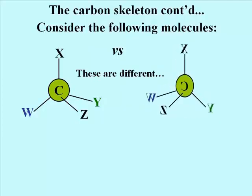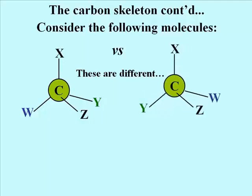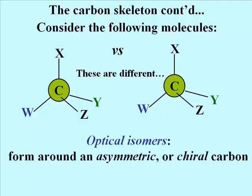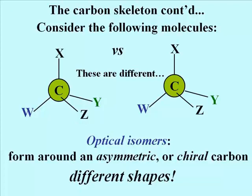The animation highlights the fact that the molecule on the left really is different from the one on the right, and in order to make the two molecules the same, you would actually have to break some bonds and make some new ones, as shown here. We say the carbon is an asymmetric carbon, or an asymmetric center. Another word we use sometimes is chiral. So optical isomers form around an asymmetric or chiral carbon. Clearly not all carbons in a molecule are going to be asymmetric. Carbon-based molecules lead to a maximum number of different shapes because of their ability to participate in isomeric forms of molecules.